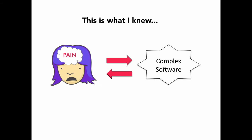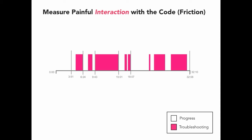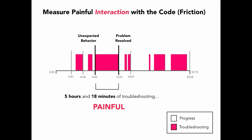When I had to work with complex code, it was really painful. But what makes development actually feel painful? I started keeping track of my painful interactions with the code and visualizing them on a timeline. The pain started when I ran into some unexpected behavior and ended when the problem was resolved. This is five hours and 18 minutes of troubleshooting. Would most of you agree that's pretty painful?